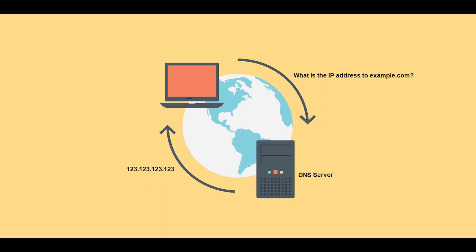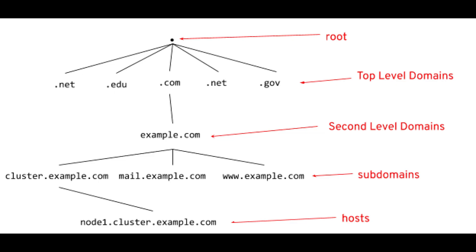The chart shown here is the DNS hierarchy, also known as domain name space, which is composed of five different elements: root, top level domains, second level domains, subdomain, and host. This is simply an inverted tree structure that helps resolve a domain name. The resolution process starts at the root level and works its way down until we resolve an IP address.